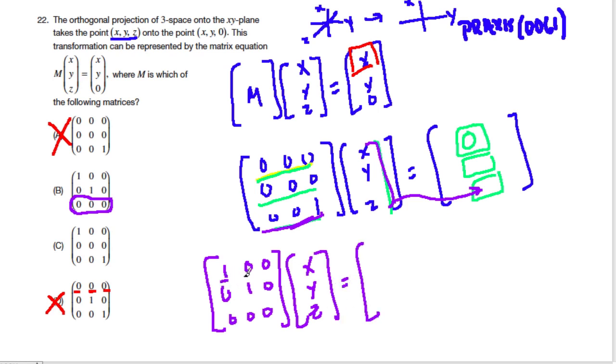First, we take the row 1, 0, 0, multiplied by x, y, z. 1 times x is x, plus, well, 0 times anything is 0, and so 0 times y is 0, and 0 times z is also 0.